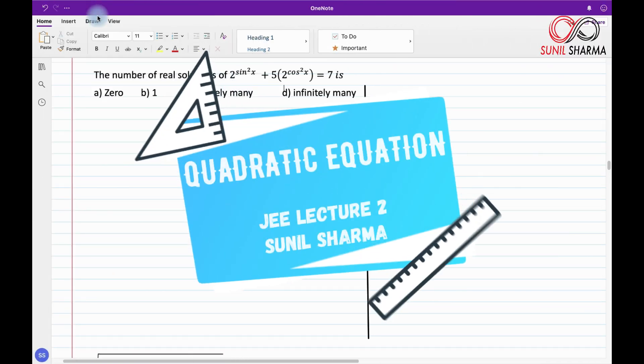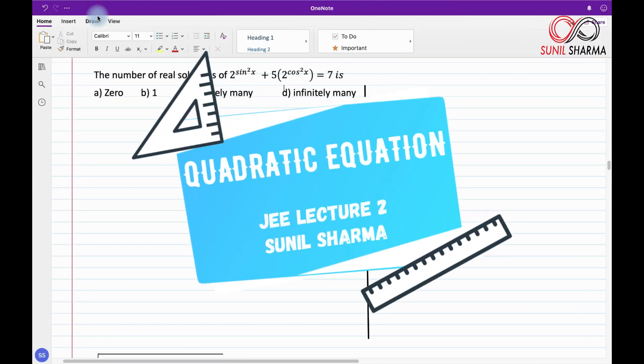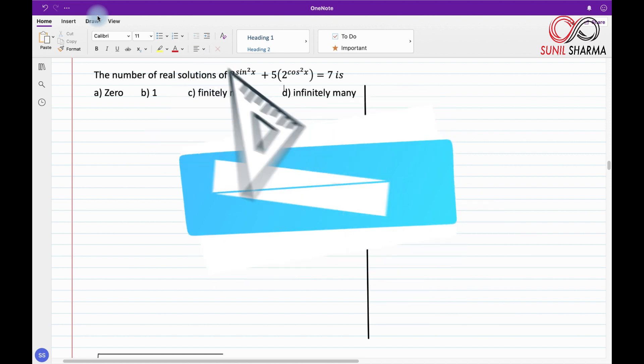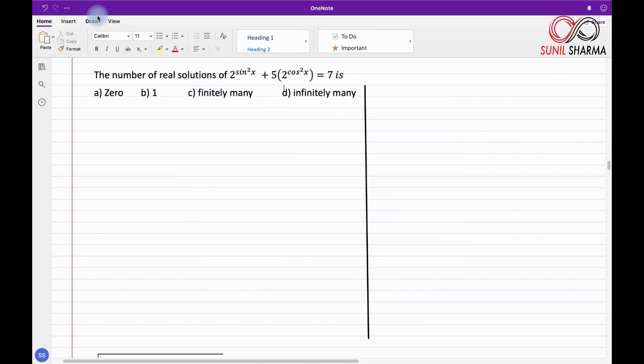Hello everyone, this is Sunil Sharma here from Speed Math. Welcome back to my channel and in today's lecture we are going to discuss a very interesting question which is there up on the screen. We need to find the number of real solutions of 2^(sin²x) + 5·2^(cos²x) = 7 and there are 4 options and we need to figure out which one is the correct one.